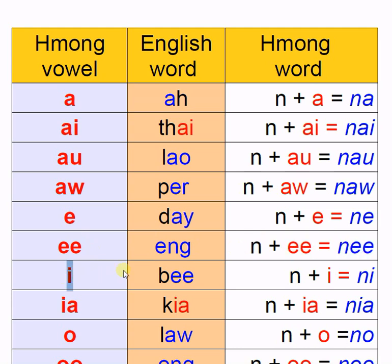The next vowel is Ý, like 'B'. The Hmong example word is Nang. Then there is IA — Ia, like 'here'. Both are the same in spelling and phonic. The Hmong example word is Ni.